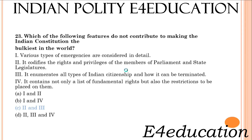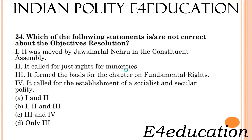The statements 2 and 3 are correct. It codifies the rights and privileges of the members of Parliament and state legislatures. It enumerates all types of Indian citizenship and how it can be terminated. Which of the following statements are not correct about the Objectives Resolution? Statements 3 and 4. It formed the basis for the chapter of fundamental rights. It called for the establishment of a socialist and secular polity.